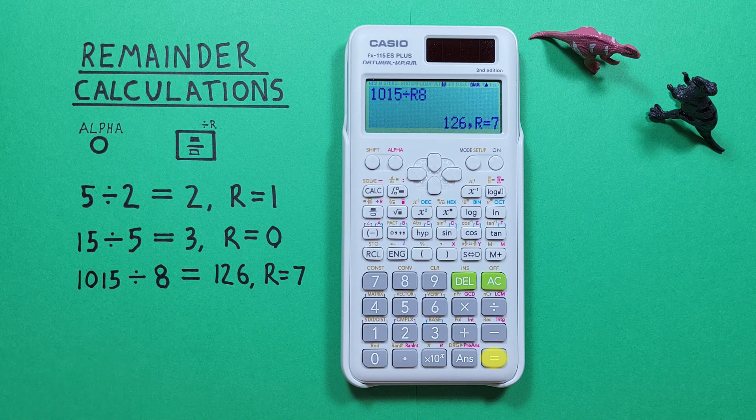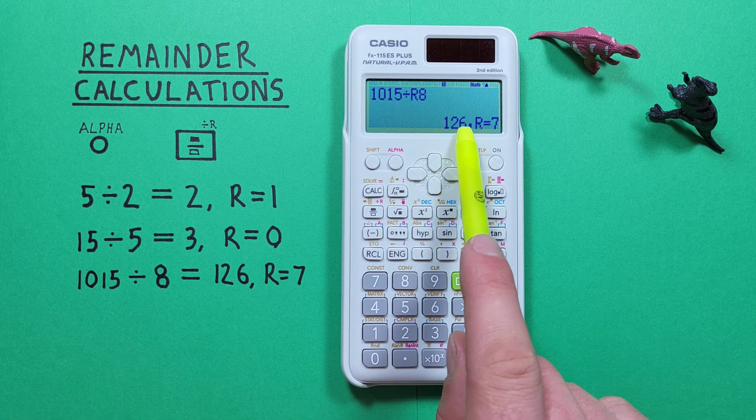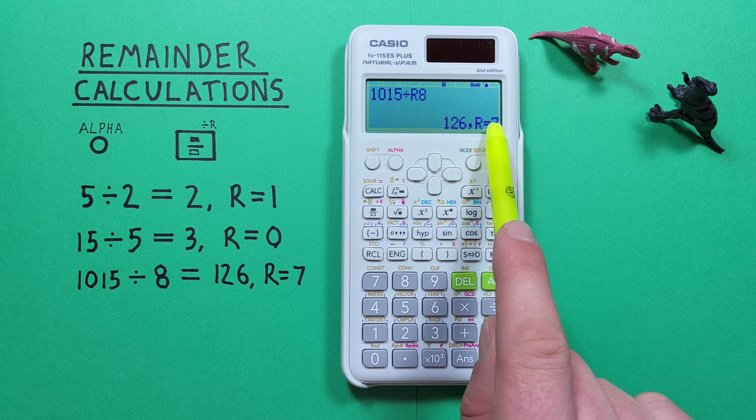And we see that 8 goes into 1015 126 times with a remainder of 7.